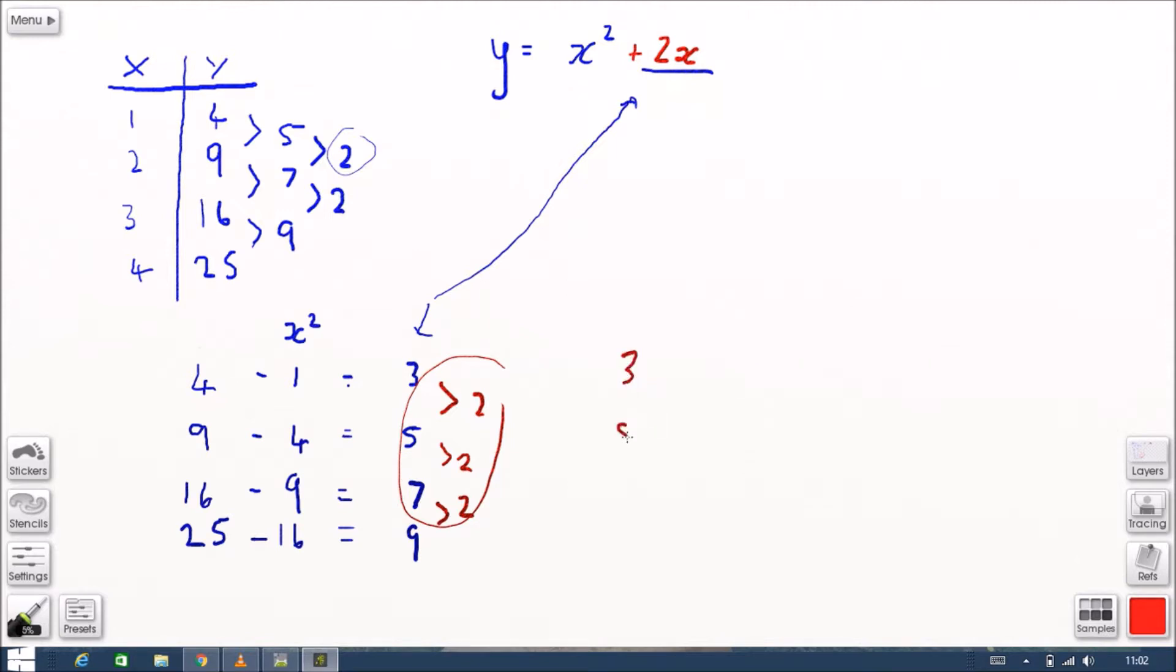So we'll compare what we've got so far. This is the differences here, and our 2x accounts for 2 times 1 is 2, 2 times 2 is 4. And that means that the linear part of our equation leaves us with, we're lacking 1, 1, 1, 1. So we're just going to need to add a plus 1 onto the end of our equation.